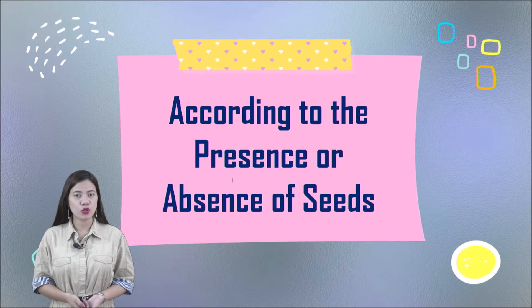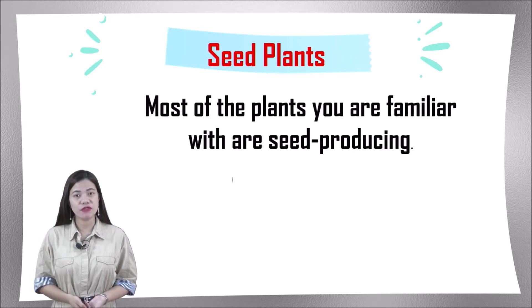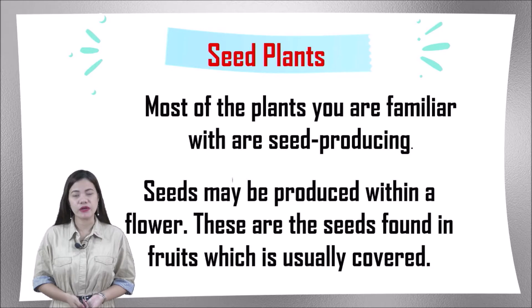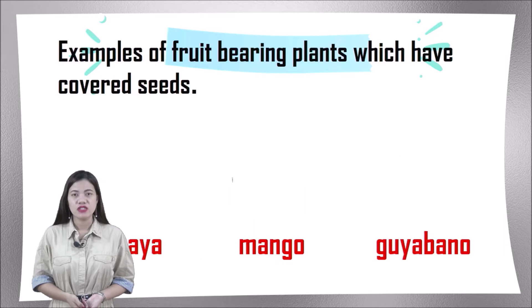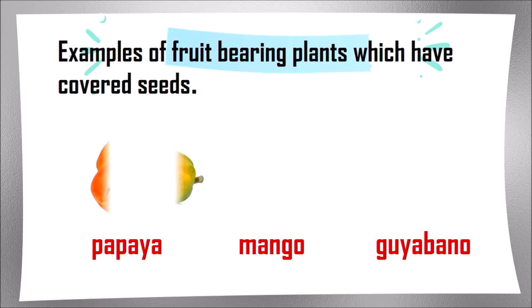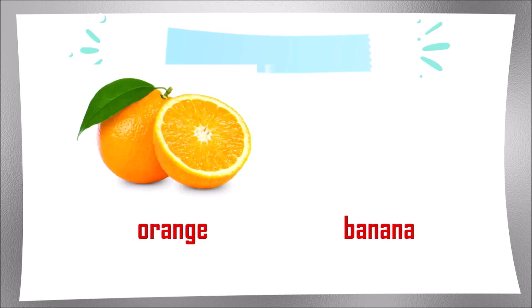Now, let us talk about classification according to the presence or absence of seeds. First, we have seed plants. Most of the plants you are familiar with are called seed-producing. Seeds may be produced within a flower. These are the seeds found in fruits, which are usually covered. Examples of fruit-bearing plants with covered seeds: we have papaya, mango, and guliabana. They have seeds inside. We also have orange and banana.